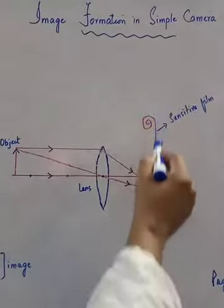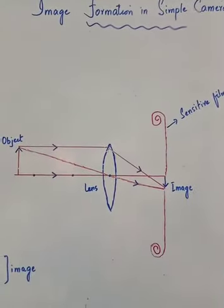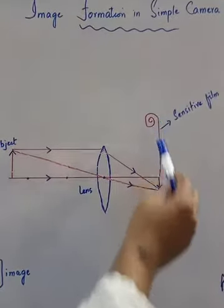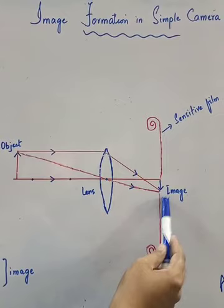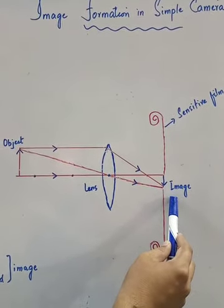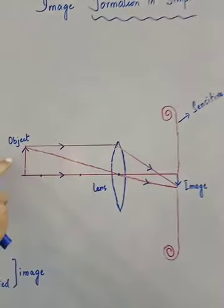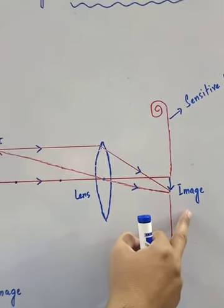This is the sensitive film, the structure of a camera. This is the film and the image is being created on that film. When the film is developed, the image will be very clear. Is the size of object and image equal? No, we get a smaller image. That was the case when we were discussing ray diagrams.